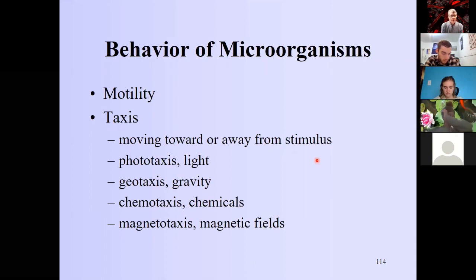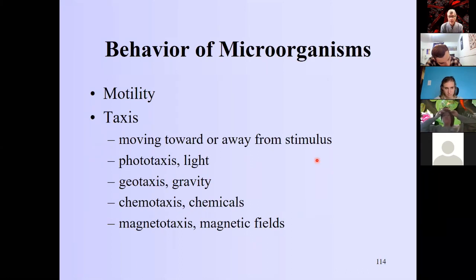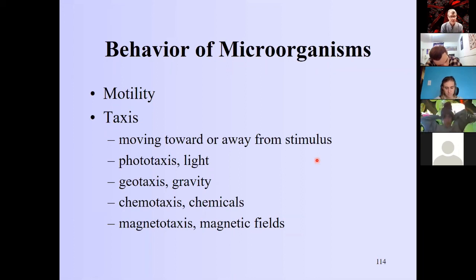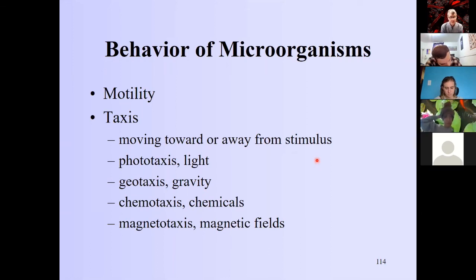Responses to stimuli can be either phobic or tactic, positive or negative. Taxes means moving towards something — phototaxis is moving towards light; negative phototaxis or a photophobic response is moving away from light. Geotaxis is moving down towards gravity. Chemotaxis is moving towards a chemical; a chemophobic response is moving away. Magnetotaxis is moving towards magnetic fields — all of these happen in microbes.